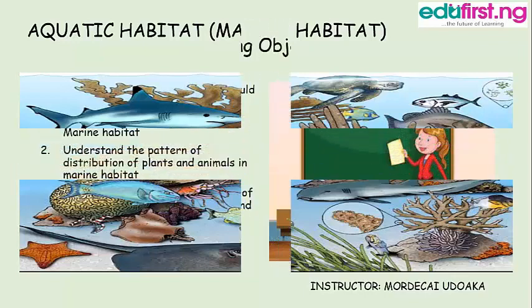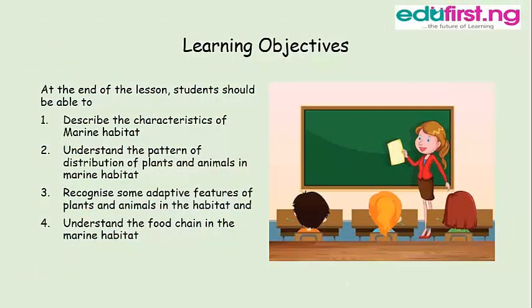Lesson objectives. At the end of the lesson, you should be able to describe the characteristics of marine habitat, understand the pattern of distribution of plants and animals in marine environments, recognize some adaptive features of plants and animals in the habitat, and also understand the food chain in the marine habitat.